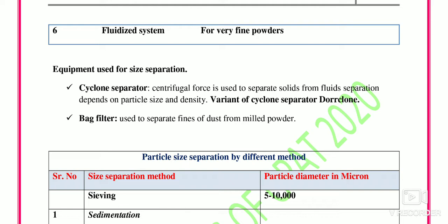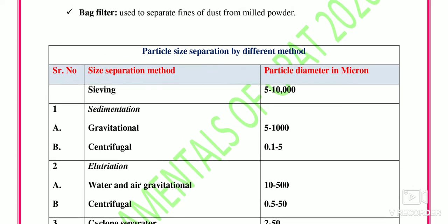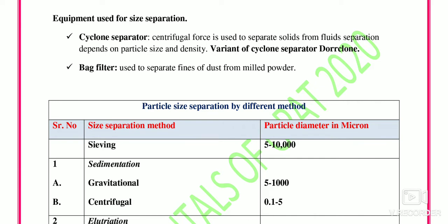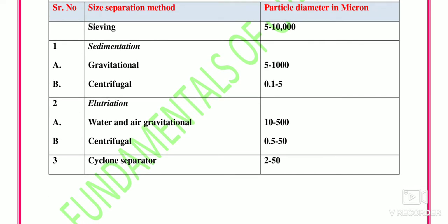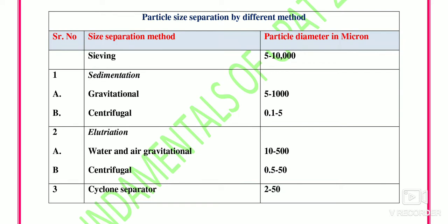The cyclone separator is an important equipment used for size separation. It works on the principle of centrifugal force and separates particles on the basis of particle size and density. A variant of the cyclone separator is the dracolone. Bag filters are used to separate fine dust from milled powder, or to separate fines from powder during milling.